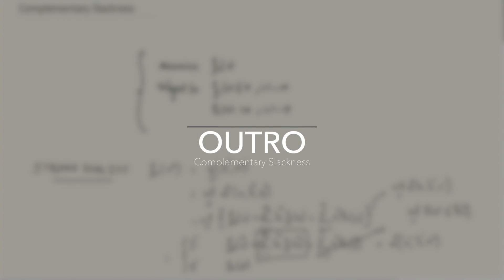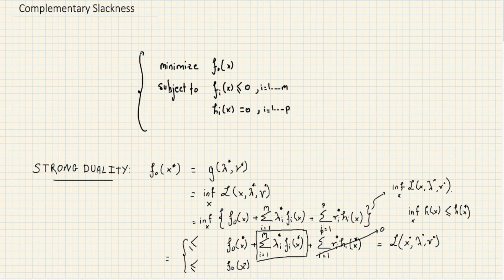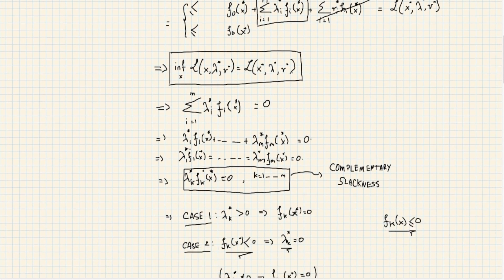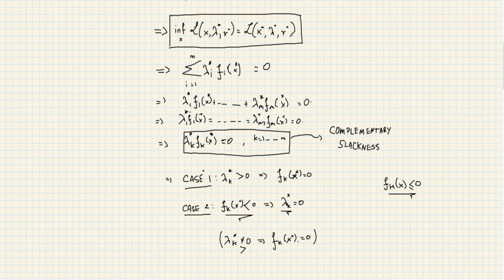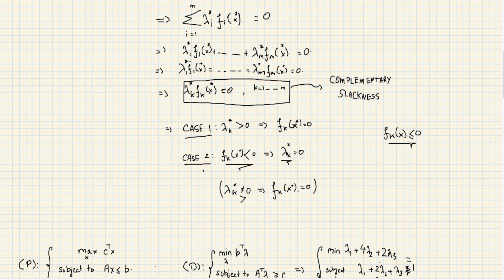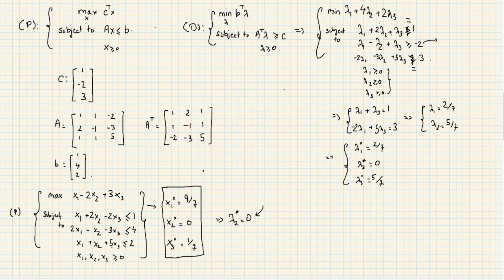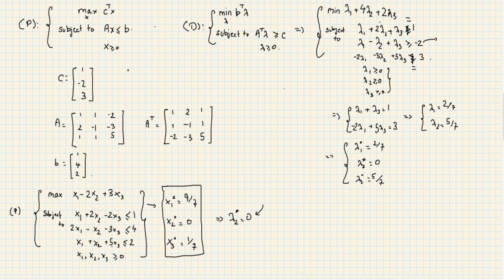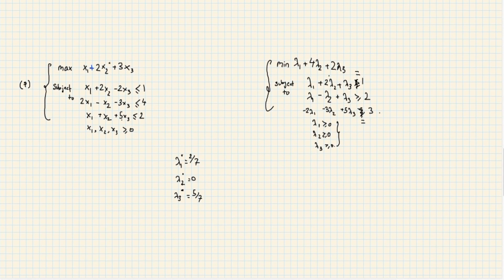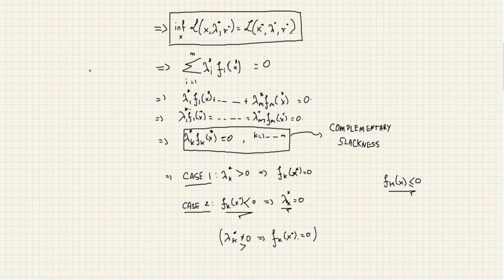In summary, complementary slackness is a powerful tool: it tells us which inequality constraints are active at the optimal point via their corresponding Lagrange multipliers, and it lets us test whether a given candidate point is optimal. For the original problem, the genie's point was indeed optimal; for the modified problem with +2, it was not.